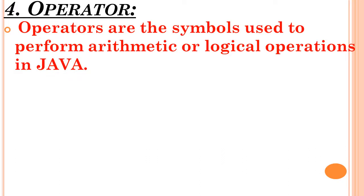Next is operators. An operator is the fourth type of token in Java. Operators are symbols used to perform arithmetic or logical operations. Arithmetic operations include addition, subtraction, multiplication, and division. Logical operations include AND, OR, and NOT. Examples of operators are the asterisk (*), minus (-), plus (+), and percentage (%) symbols.